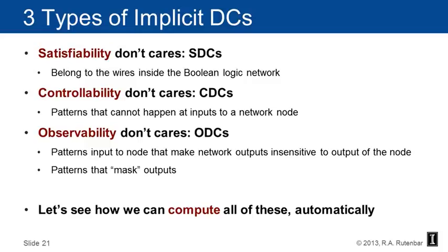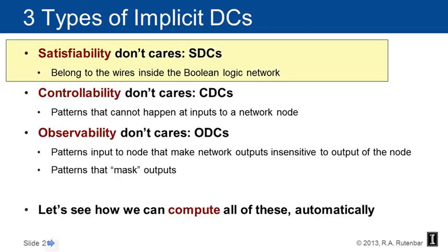These have acronyms: SDCs, CDCs, and ODCs. We're going to see how we can compute all of these automatically over the next couple of lectures. For now, let's start with the first kind — the foundational kinds of don't cares. We use these to compute other things. The satisfiability don't cares belong to the wires inside the Boolean logic network.